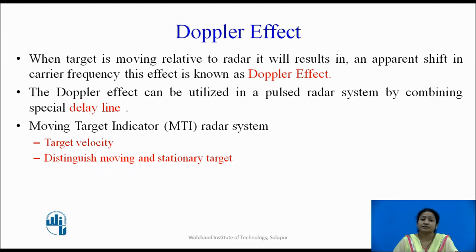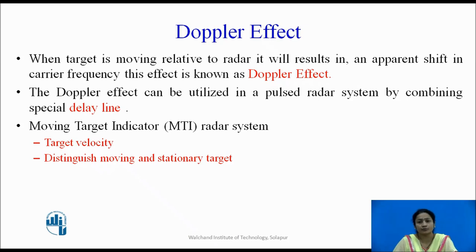The advantage and key feature of the MTI Radar System is that it can identify the velocity of a moving target and distinguish between stationary targets and moving targets.